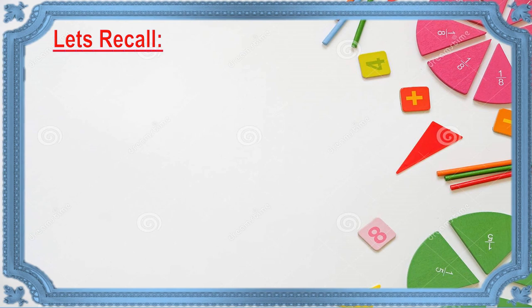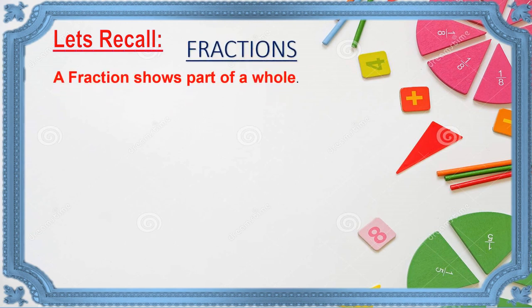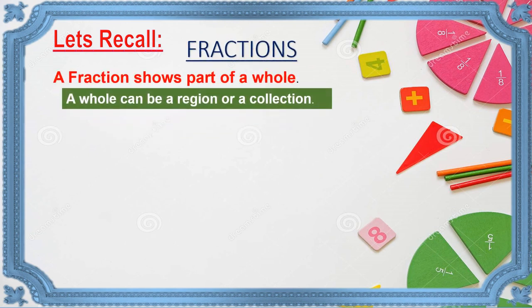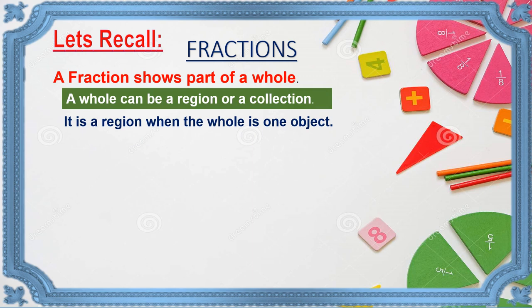Let's recall fractions. A fraction shows part of a whole. A whole can be a region or a collection. It is a region when the whole is one object. Let's understand it better with an example. I have one pizza, and from that I am taking out two pieces.